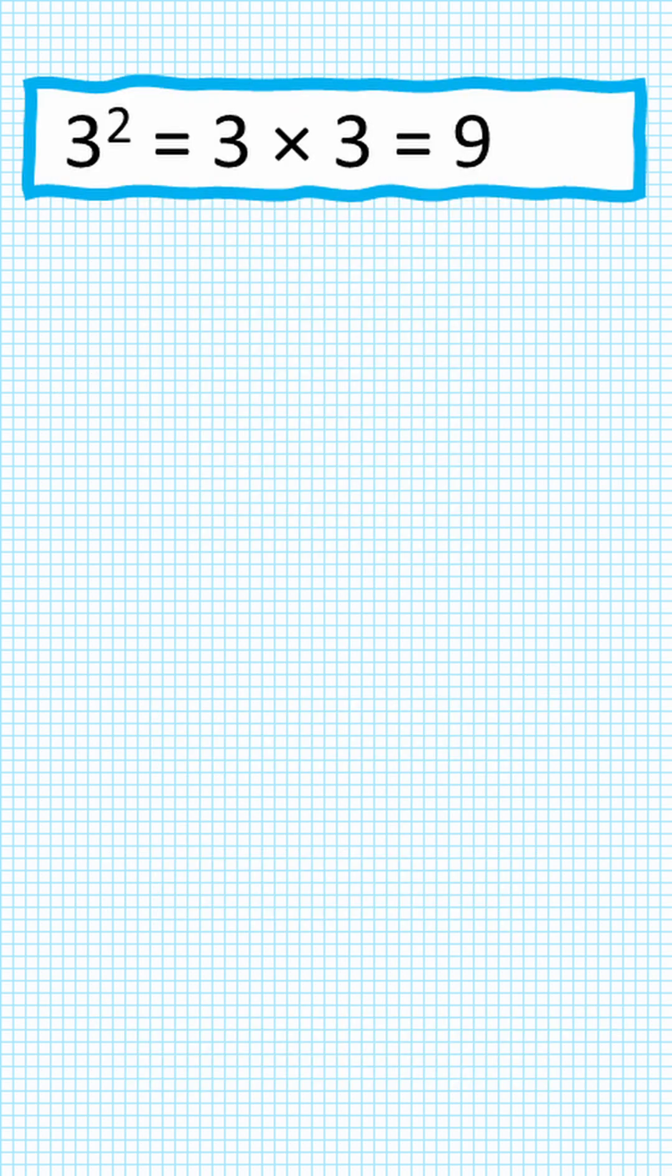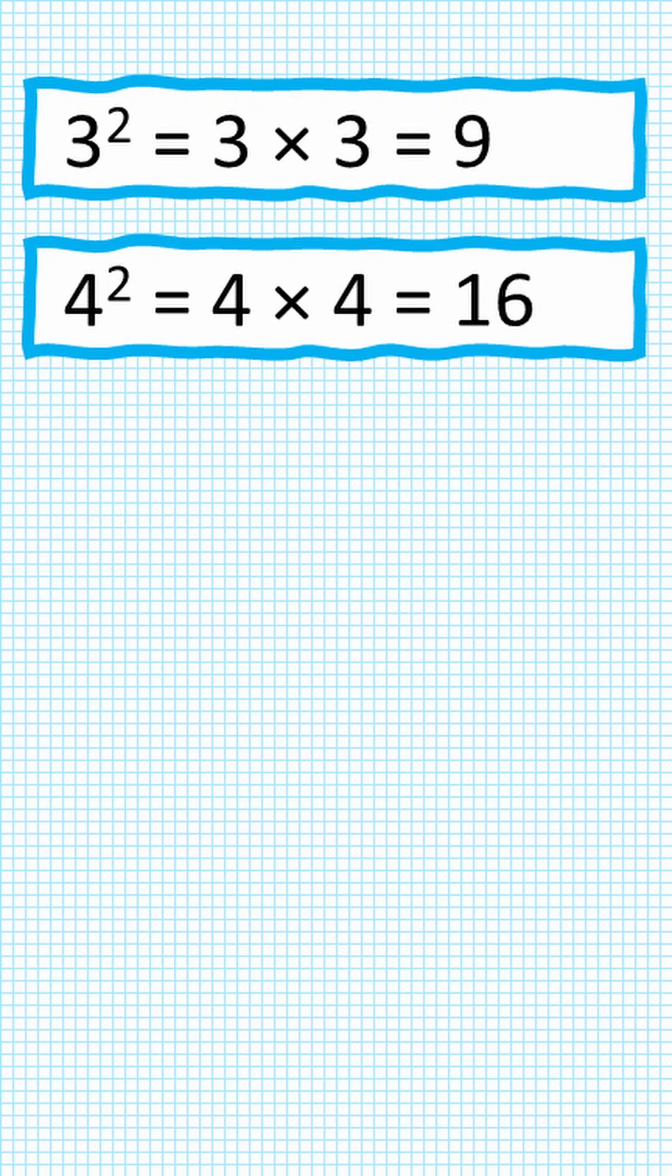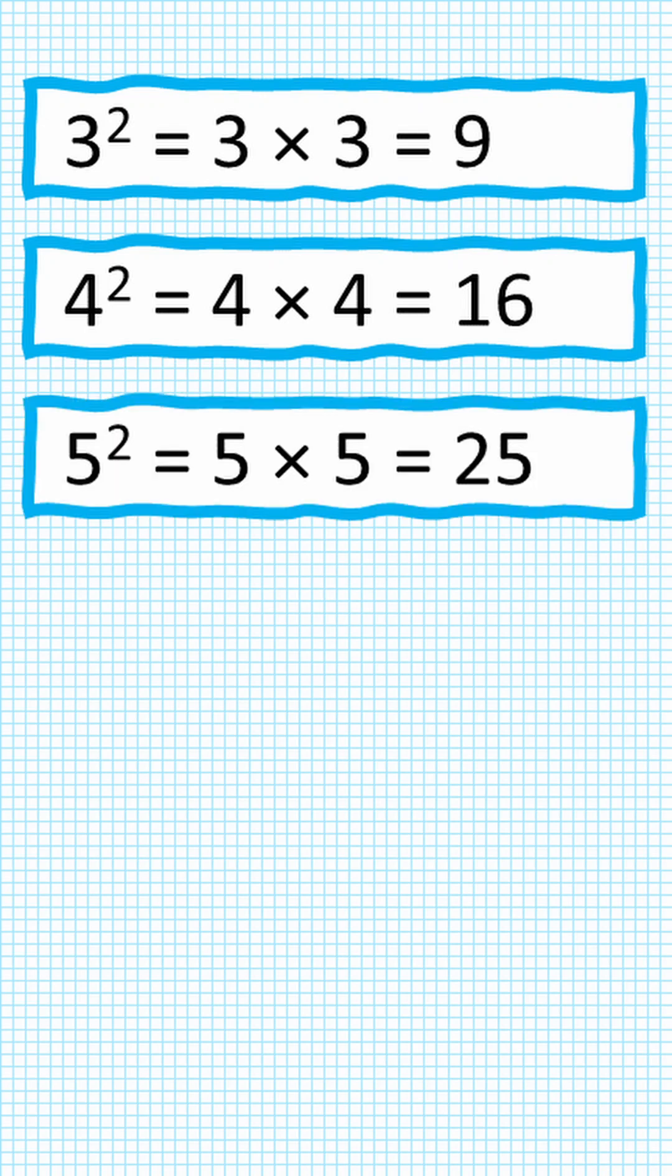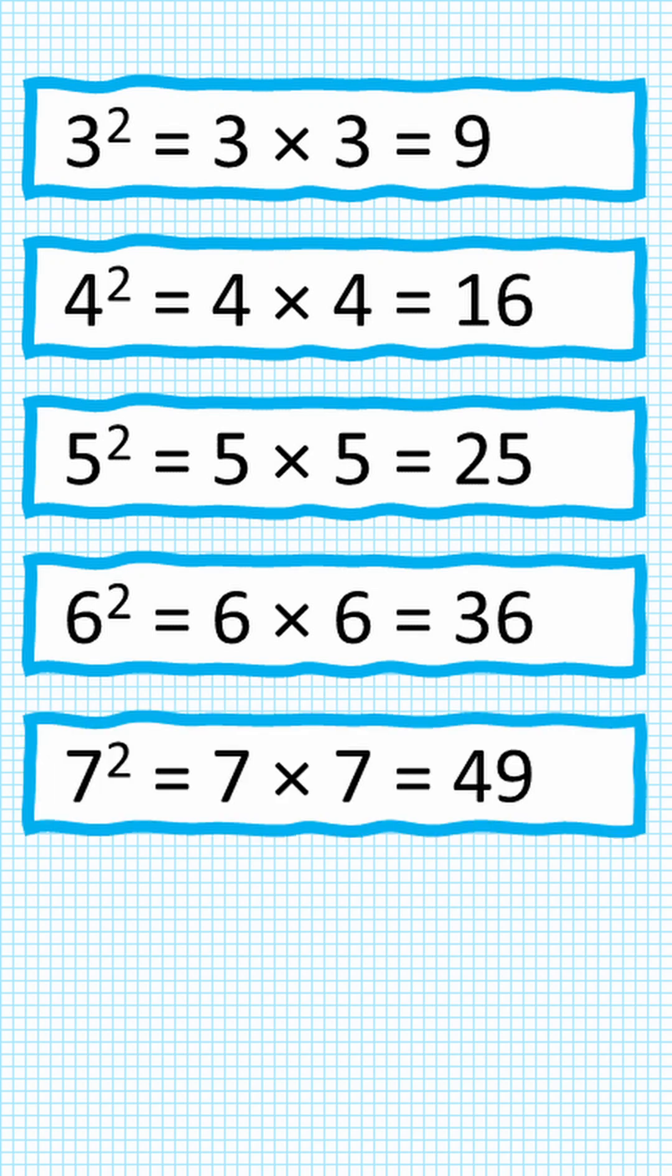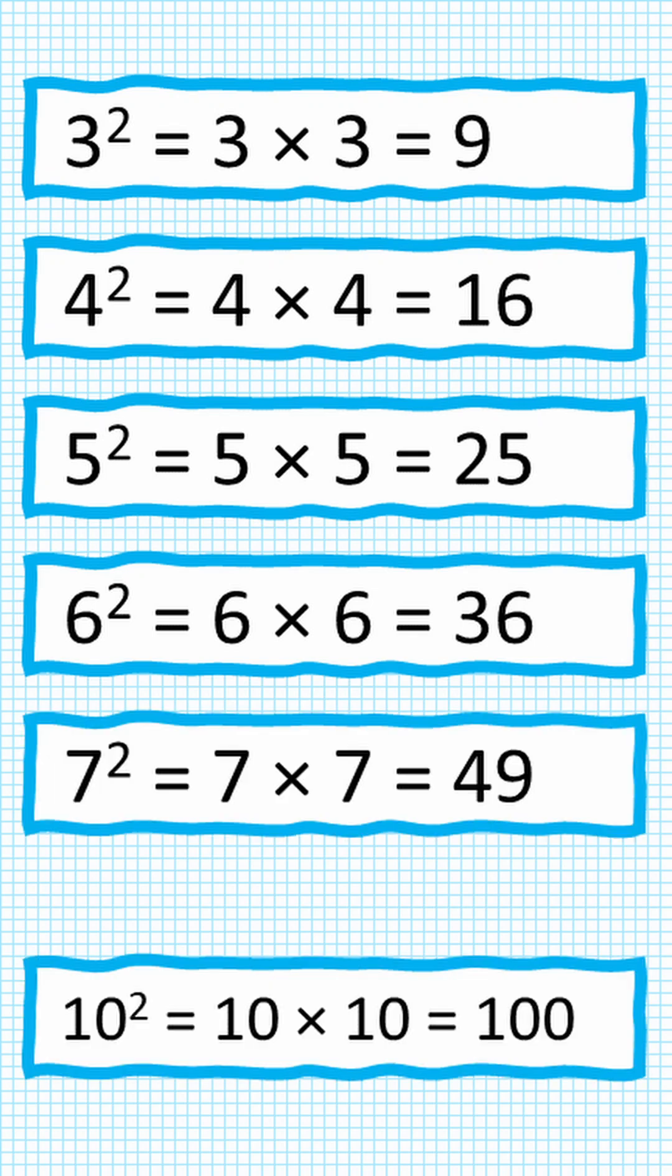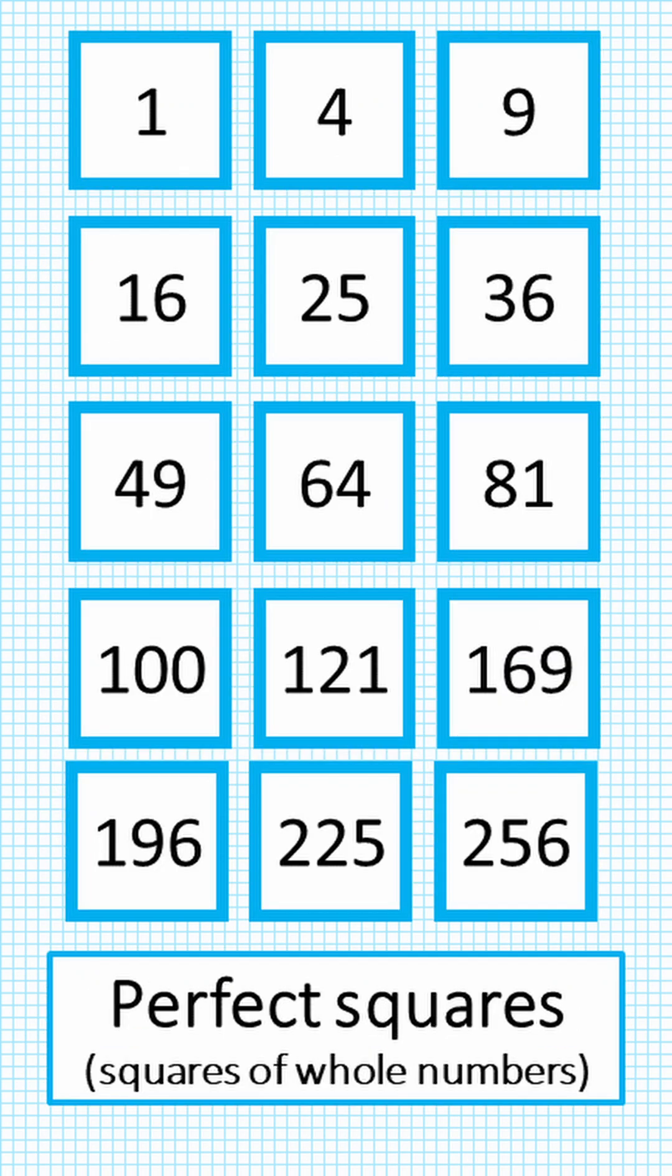In the same way we can have 4 squared is 4 times 4 which is 16. 5 squared, 5 times 5 equals 25. 6 squared is 36. 7 squared is 49, and an interesting one, 10 squared is 10 times 10 which equals 100. These numbers here are called perfect squares because they are the squares of whole numbers.